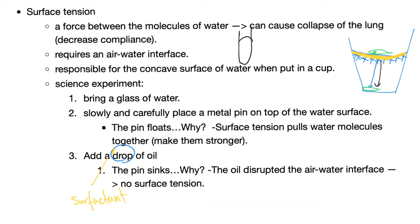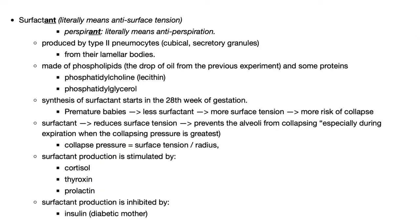Medicine is so much fun once you understand what you're talking about. Surfactant means anti-surface tension — same as antiperspirant, where A-N-T means anti-perspiration and perspiration means sweating. Produced by type 2 pneumocytes from their lamellar bodies — that's an exam question. So type 2 pneumocytes and lamellar bodies are both exam questions. Surfactant is made of phospholipids — basically a drop of oil.